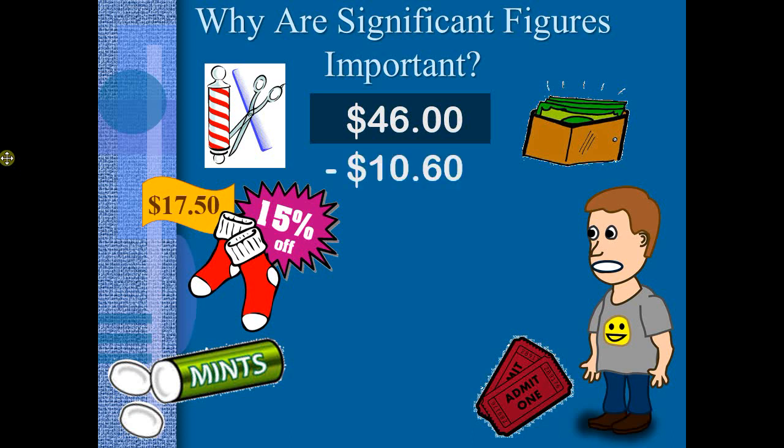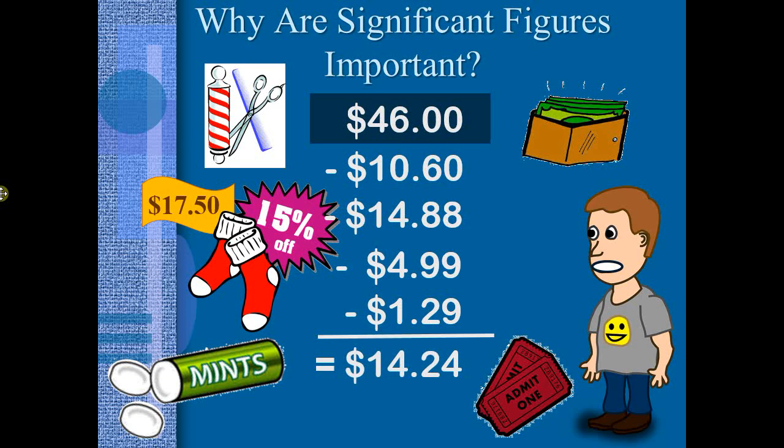His haircut, yeah, it was $10, but there was tax on that. So it was $10.60. If he did a little more exact math on his socks, he would have found that his socks cost him $14.88. The flowers were $4.99, mints were $1.29, so using these more precise measurements, we would find out that, yes, there were only $14.24 in his wallet.